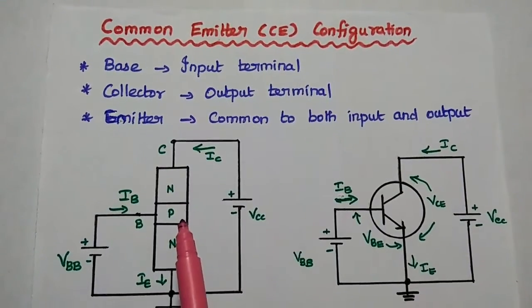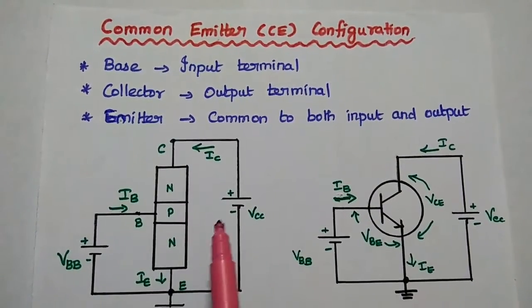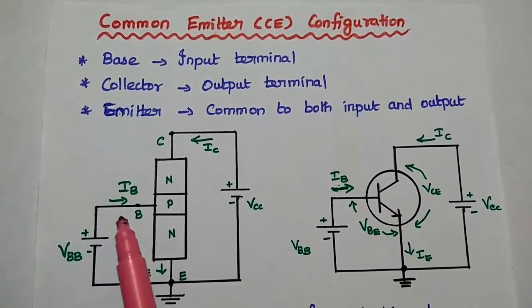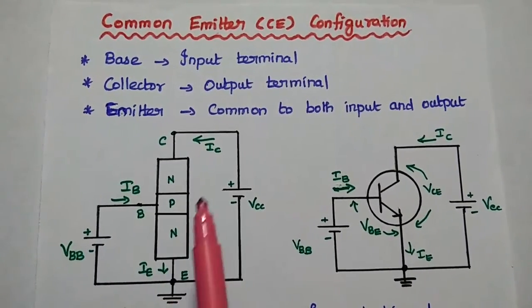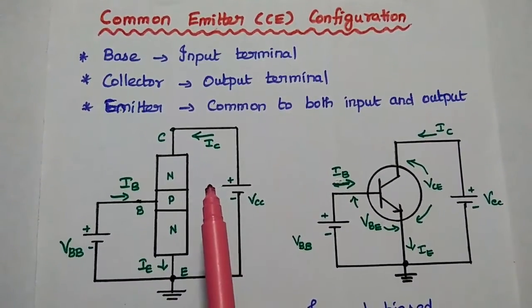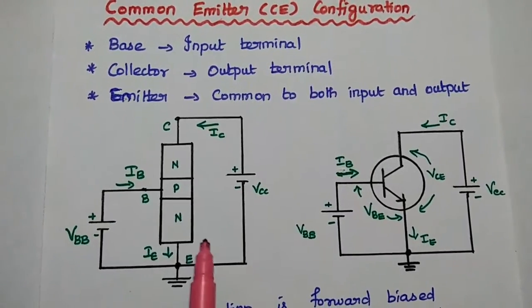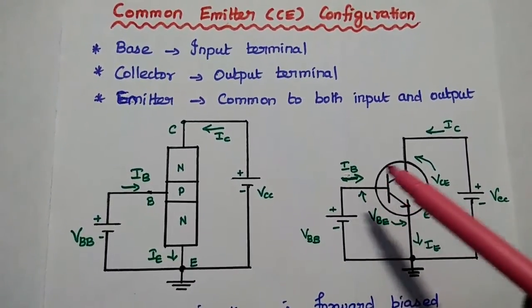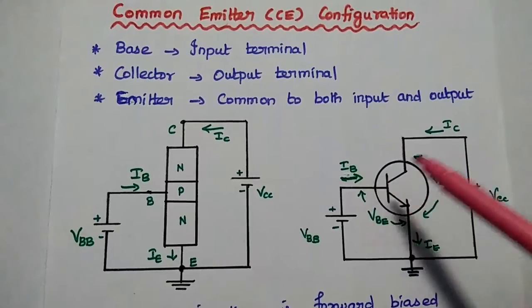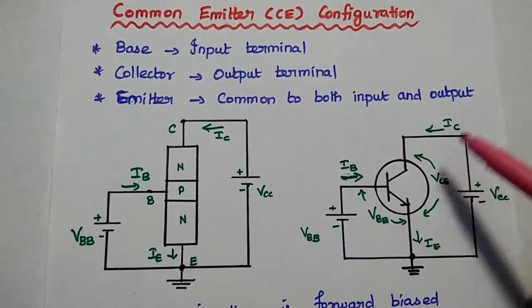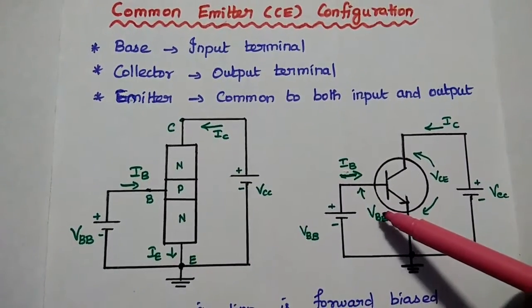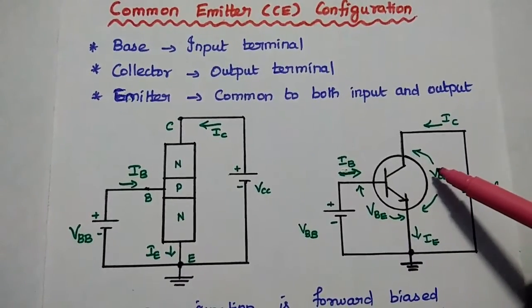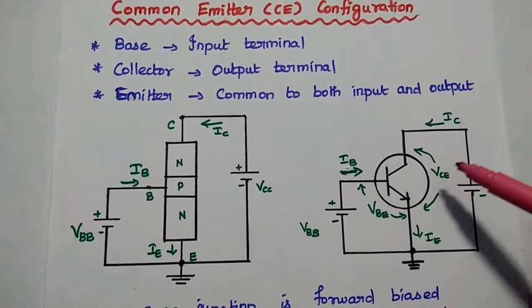This is the circuit diagram of common emitter configuration. The input is applied between base and emitter, and output is taken from collector and emitter. Emitter is the common one. Here, base current is the input current, collector current is the output current, base emitter voltage is the input voltage, and collector emitter voltage is the output voltage.